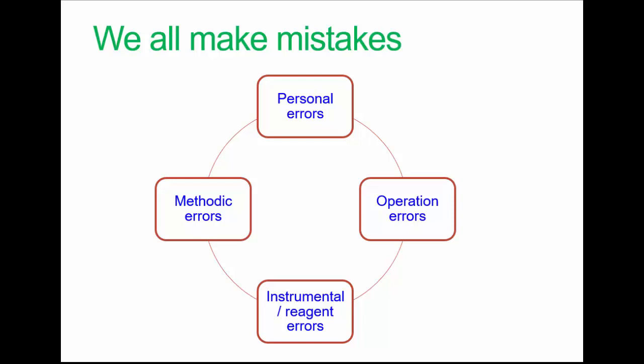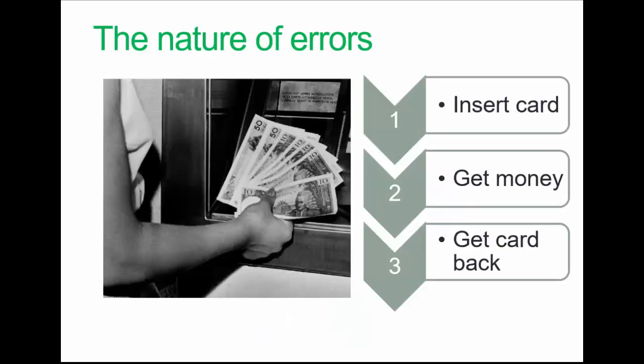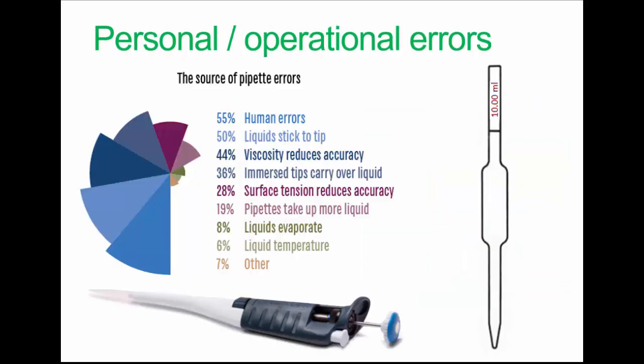There may be issues with the method. Here's an example of an error being designed into a process. When cash machines first appeared, the process was: insert your card, give it your code, tell them which money you want, get your money back, and then get your card back. People would get the money and walk off, leaving their card in the machine. These days, when you've completed the process, you get your card back, then you get your money, which is a much more logical way of doing it.